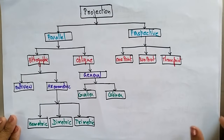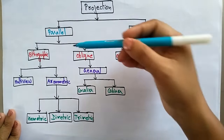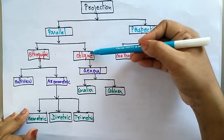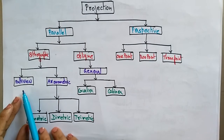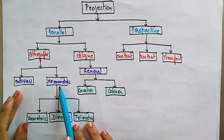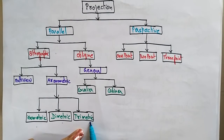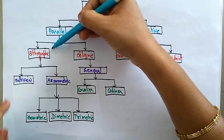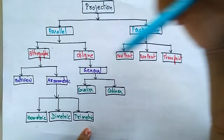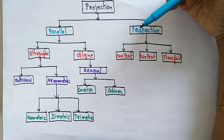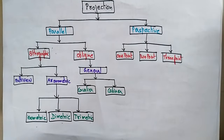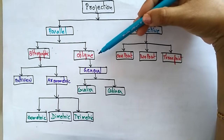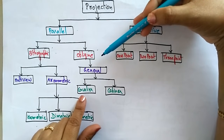Parallel projection is of two types: orthographic and oblique. Orthographic can be viewed as a multi-view or axonometric view — meaning isometric, diametric, or trimetric. The oblique is a more general type and is of two types: one is cavalier and another is cabinet.